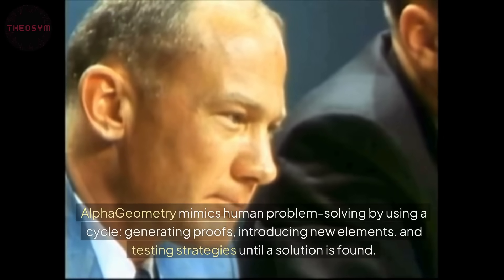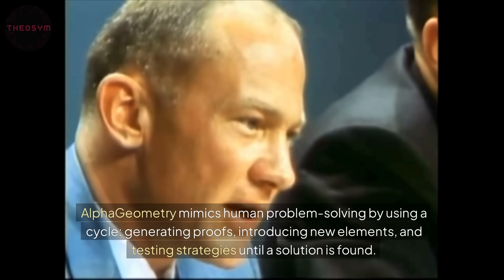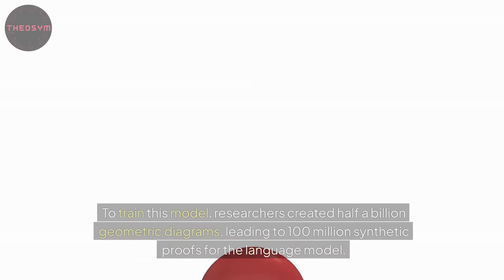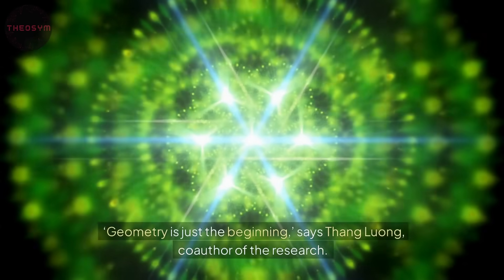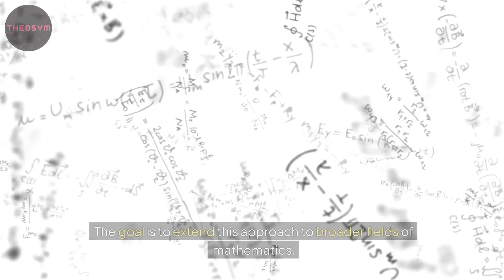Alpha Geometry mimics human problem solving by using a cycle, generating proofs, introducing new elements, and testing strategies until a solution is found. To train this model, researchers created half a billion geometric diagrams, leading to 100 million synthetic proofs for the language model. Geometry is just the beginning, says Thang Luong, co-author of the research. The goal is to extend this approach to broader fields of mathematics.